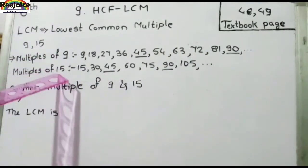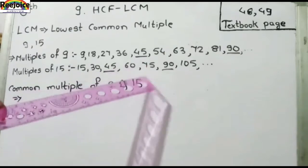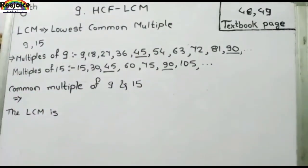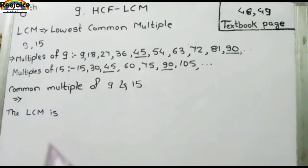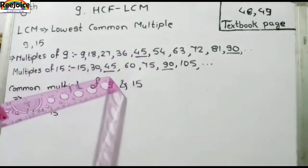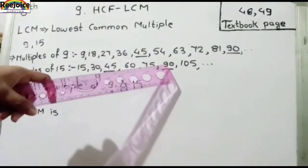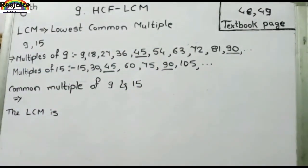Multiples of 15 are: 15, 30, 45, 60, 75, 90, 105 और आगे तक भी लिख सकते हैं। पर अपने को दोनों tables तब तक लिखना है जब तक कोई common values नहीं मिल जाती दोनों lines में। जैसे यहाँ पर 45 और 45 same दिख रहा है और 90 और 90 same दिख रहा है।